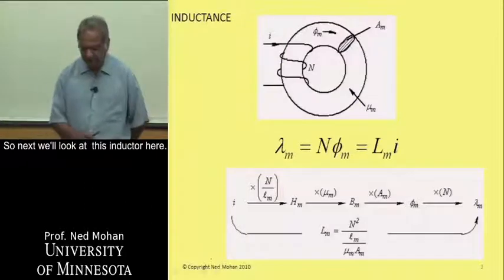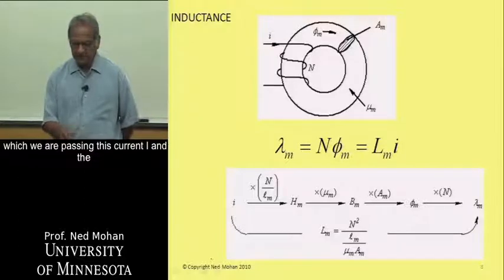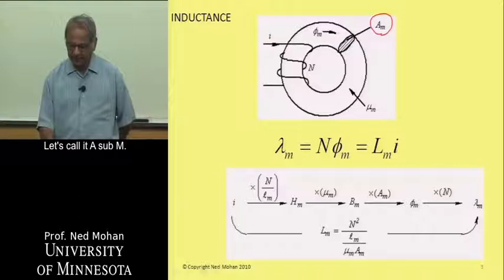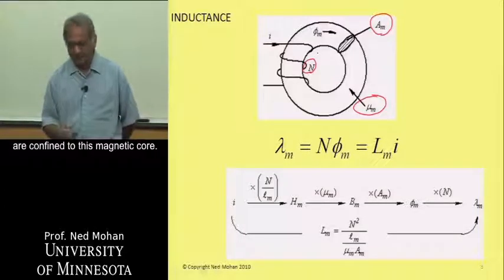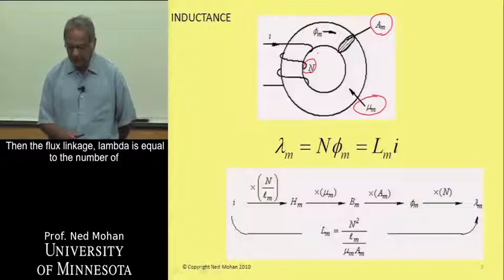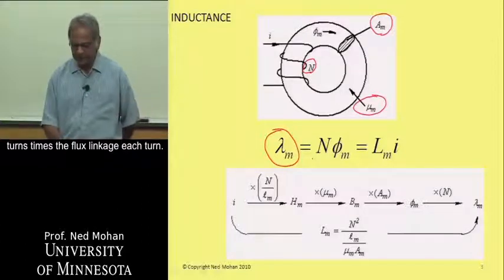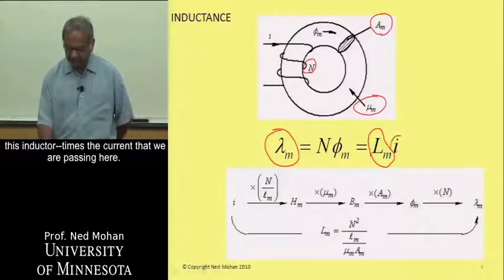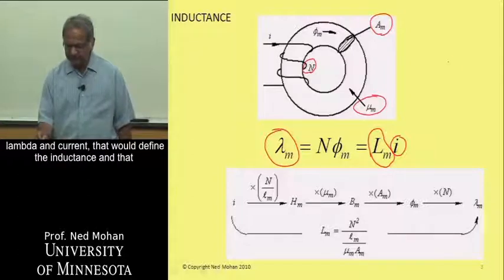Next, we look at an inductor on a magnetic core with N turns carrying current I. The cross-sectional area through which flux passes is A sub m, the permeability is mu sub m, and we assume all flux lines are confined to the magnetic core. The flux linkage lambda equals the number of turns times the flux linking each turn, which also equals the inductance times the current.